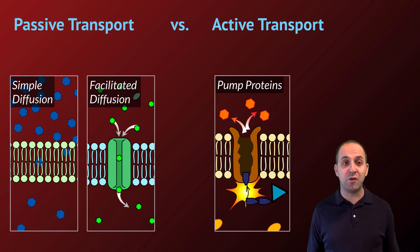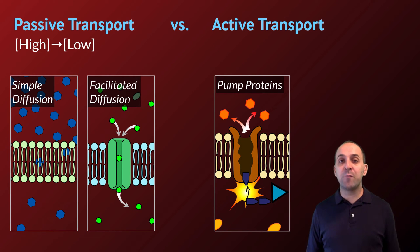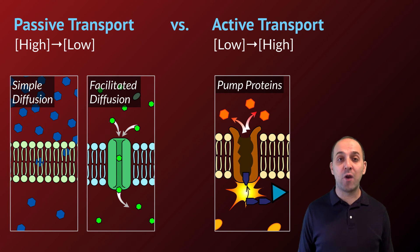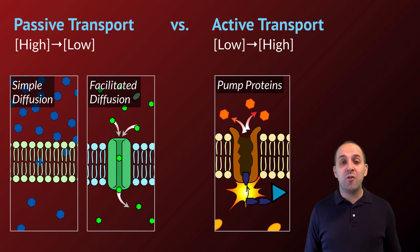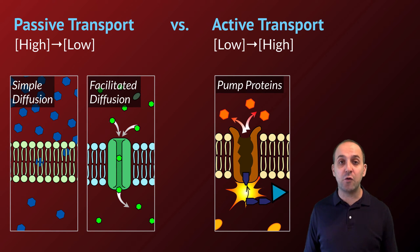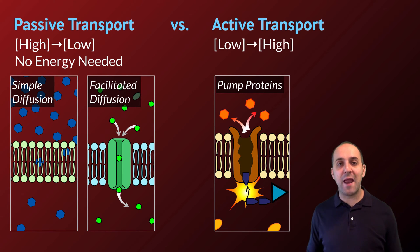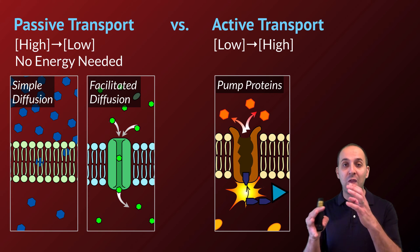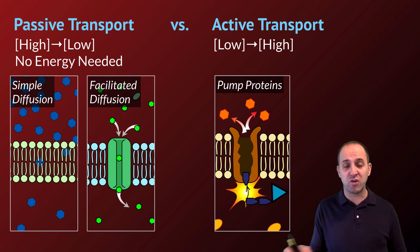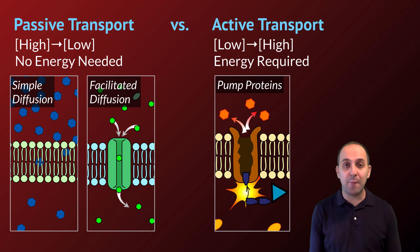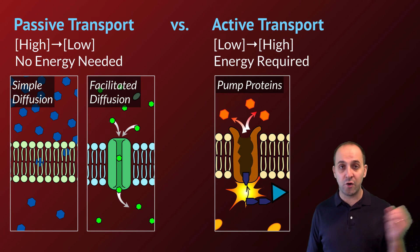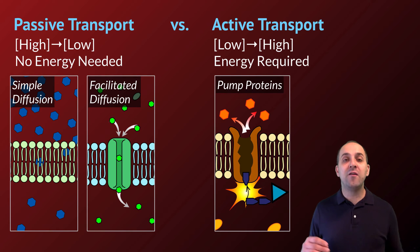There are two major types of transport: passive transport and active transport. Passive transport is the movement of molecules from an area of high concentration to an area of low concentration. Active transport is the opposite — taking molecules from where there aren't very many of them and moving them to where there are a lot. The shorthand of putting something in square brackets means the concentration of that substance. It doesn't require any energy to move molecules from high to low concentration; they'll naturally spread out over time. However, it does require an input of energy to move molecules from low concentration to high concentration, because you are going against the concentration gradient.